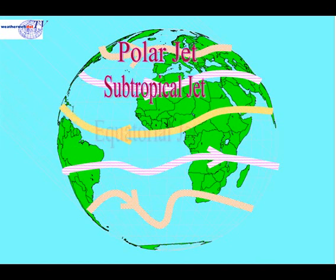And finally, there's the equatorial easterly jet. This occurs between the equator and about 20 degrees north, and is strongest between the Philippines and West Africa. It occurs at very high altitudes near 40,000 to 45,000 feet, and is partly responsible for driving tropical storms across the Atlantic, these eventually turning into hurricanes.